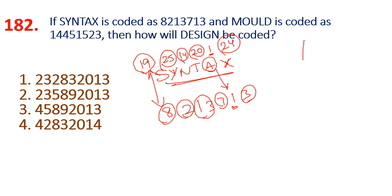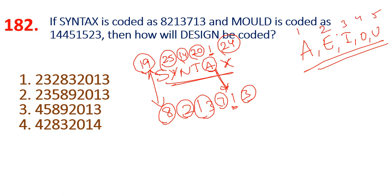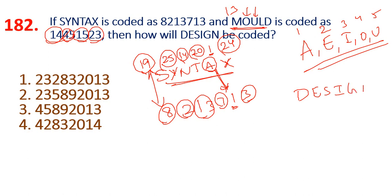The vowels are A, E, I, O, Y. For the number-based coding, one of the nodes is 23. The concept is: M is 13, 13 plus 14 is 27; L is 12, 12 plus 15 is 27; D is 4, 4 plus 23 is 27. So the design concept is DESIZN.